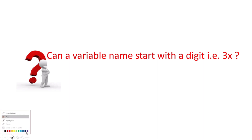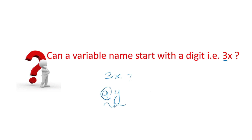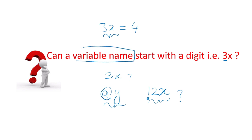The question is: can a variable name start with a digit? For example, is 3x a valid variable name? Or is @y a variable name? Or *2x? What are the conventions for variable names — can we write anything on the left-hand side, like 3x = 4? Are there rules in Python for defining variable names? Think about it — I'll see you in the next video with the answer.